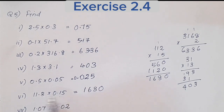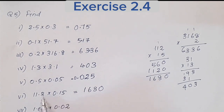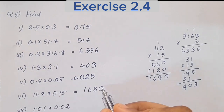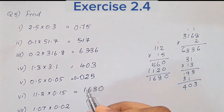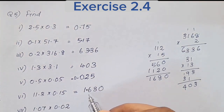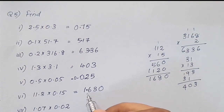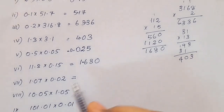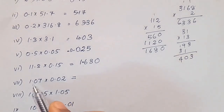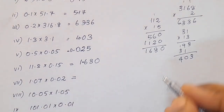The decimal digits total: 11.2 has 1 digit, 0.15 has 2 digits — total 3 digits. So we place the decimal point 3 places from the right in 1680, giving 1.680.